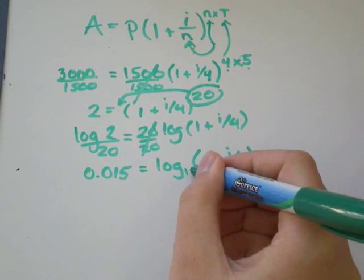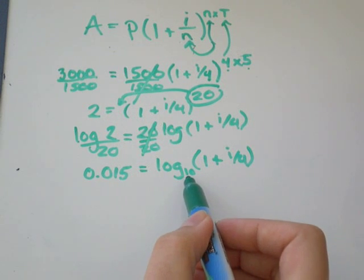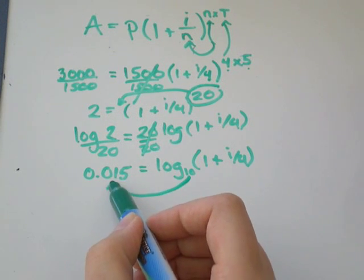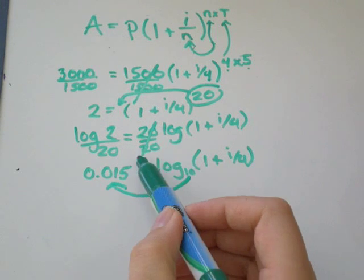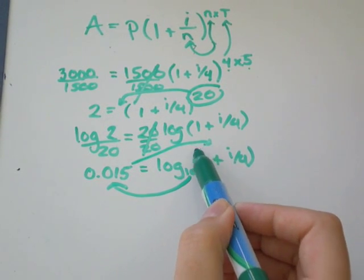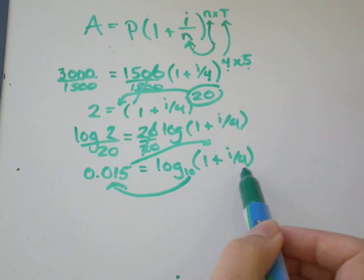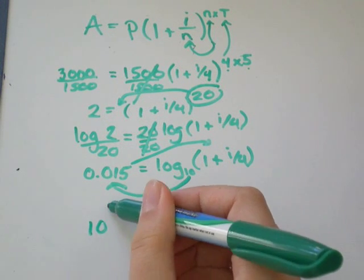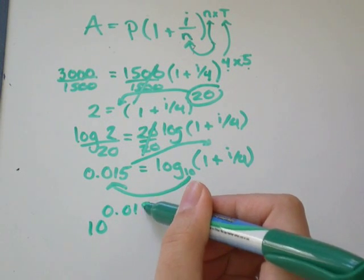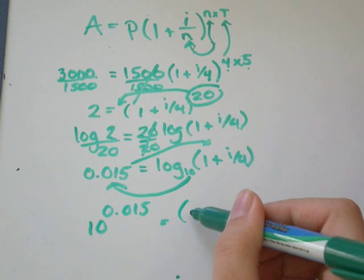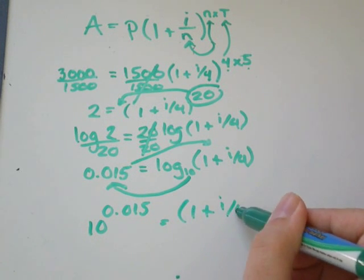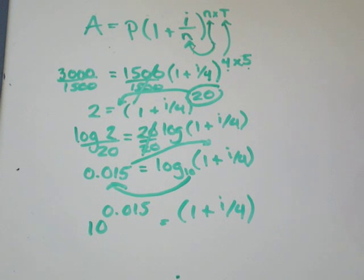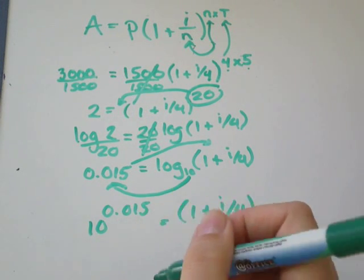Let's assume this is log 10. We are going to go 10 to the exponent of 0.015 equals this stuff in brackets. 10 to the exponent of 0.015 equals 1 plus i over 4. 10 to the exponent of 0.015, I get that's equal to 1.035.